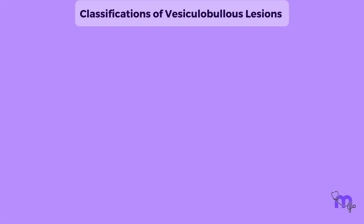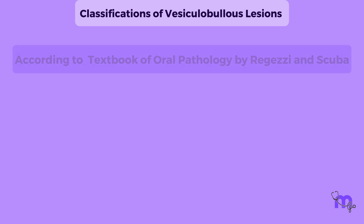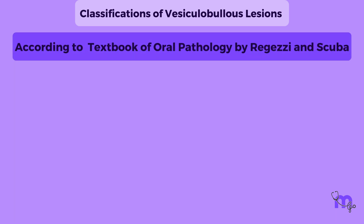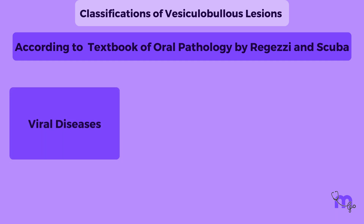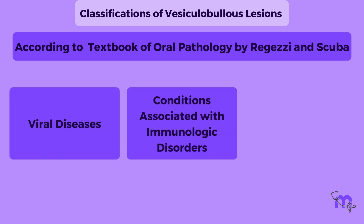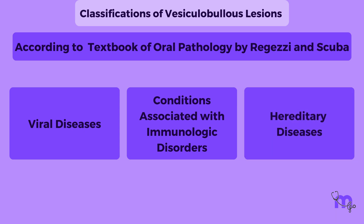Another important classification of vesicular bullous lesions is based on the textbook of oral pathology by Rajendran and Sivapathasundharam. Here the lesions are categorized as viral diseases, conditions associated with immunologic disorders, and hereditary diseases.